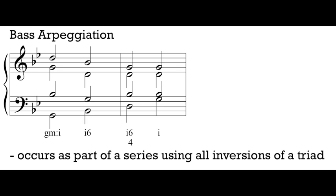Another place we'll sometimes see a 6-4 chord is as part of a bass arpeggiation. Arpeggiation means to move through all the different members of a chord. When we talk about a bass arpeggiation passage, we're talking about a grouping of chords in which we move through different inversions of the same chord. In G minor, we start in root position, our bass moves up to first inversion, then up to second inversion, then back to root position. When we see a 6-4 in this context, it's just a way to stretch out a particular passage of music by hearing different versions of the same chord.